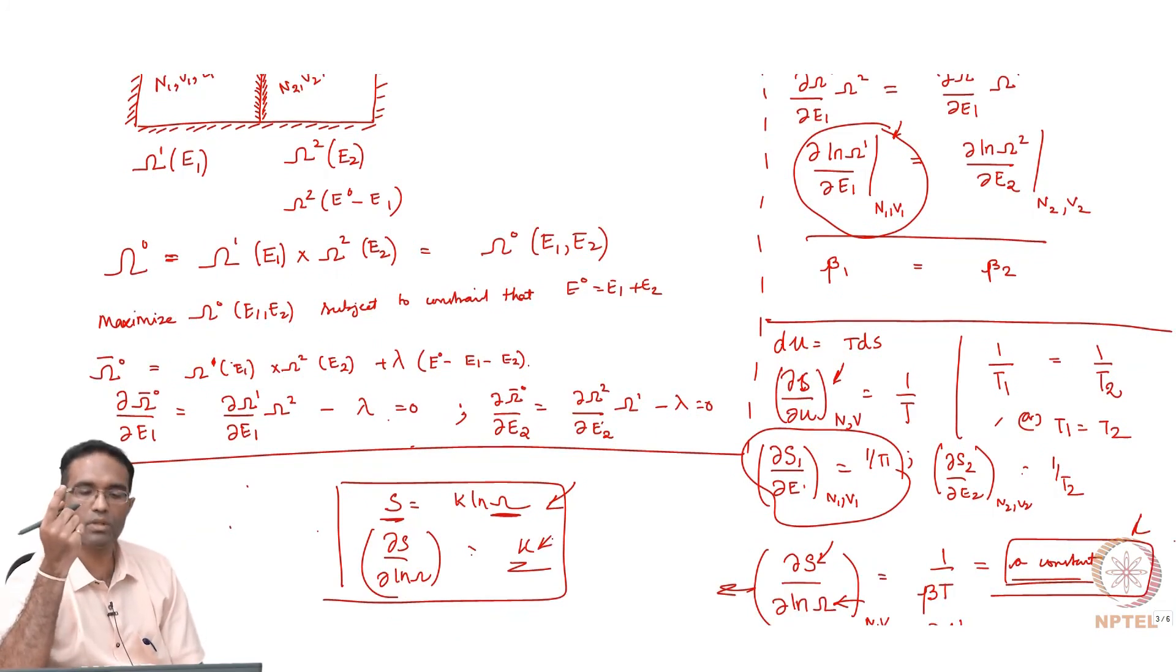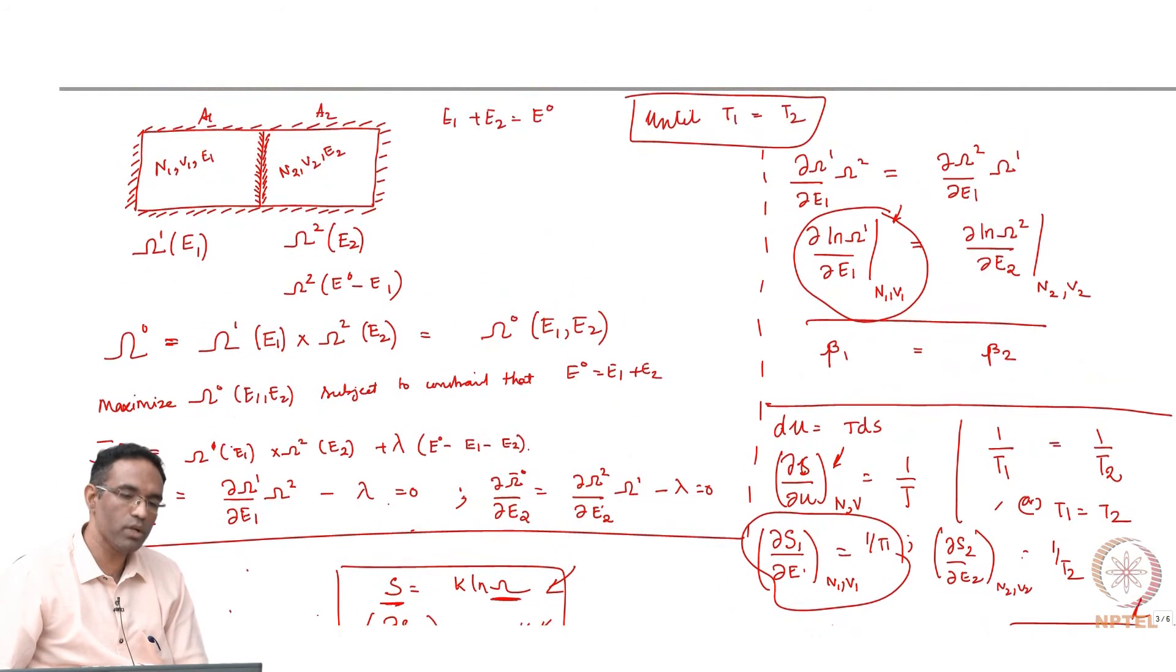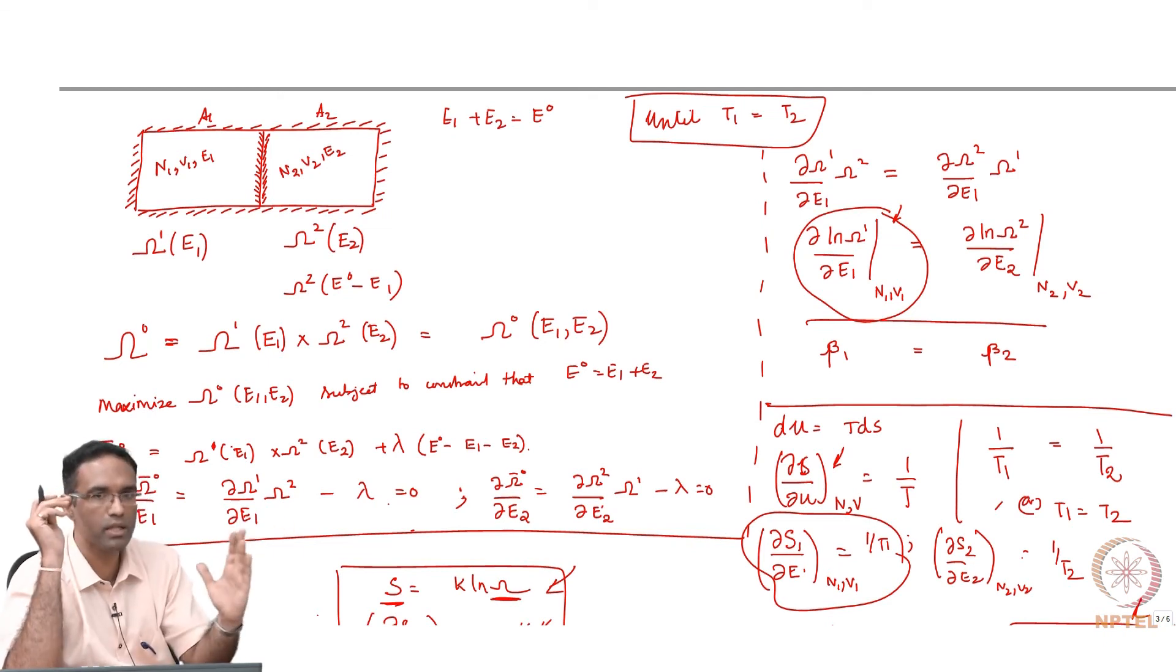Now, the next job is to see what will happen if you actually allow this central piston or whatever this thing that is allowing the exchange of energy, to not only exchange energy, but in addition to that also move. If you allow it to move, then what should be the conditions for equilibrium?